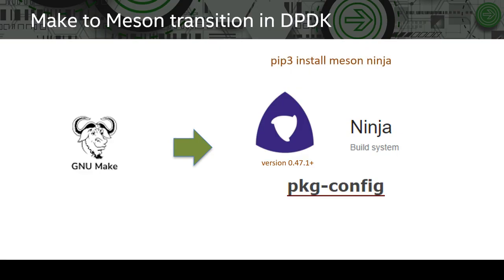Both Meson and Ninja can be installed via pip. pkg-config on the other hand can be installed via distro-specific install commands, for example apt install in case of Ubuntu.